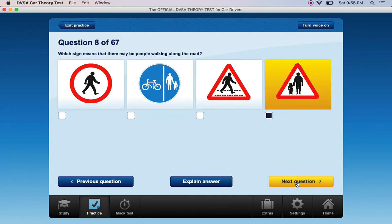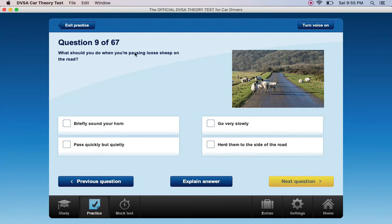Which sign means that there may be people walking along the road? The triangular sign with the adult and child.